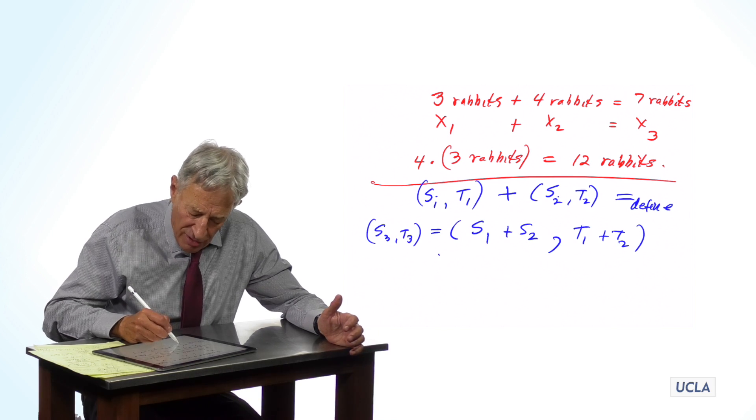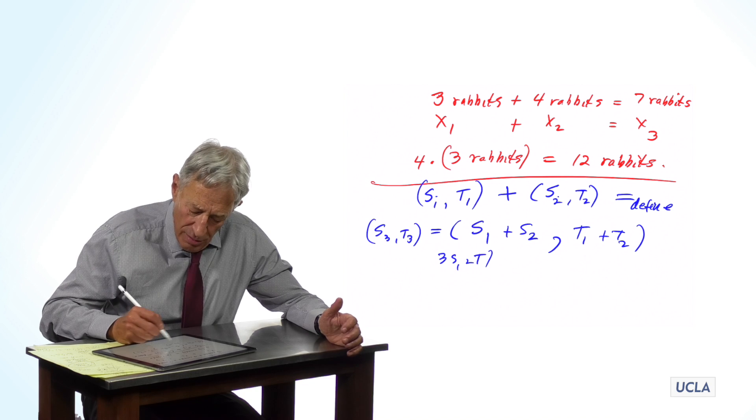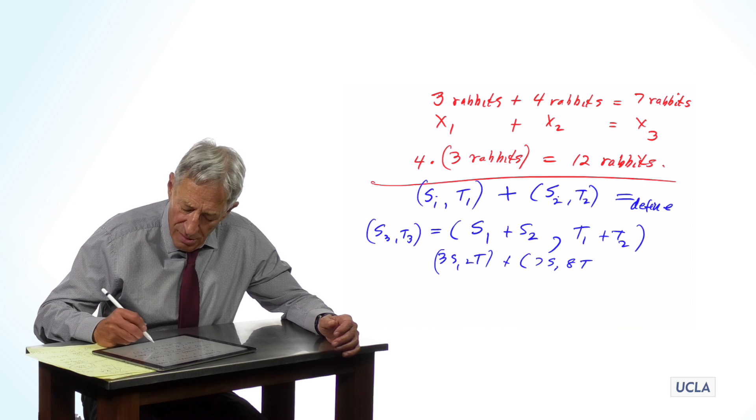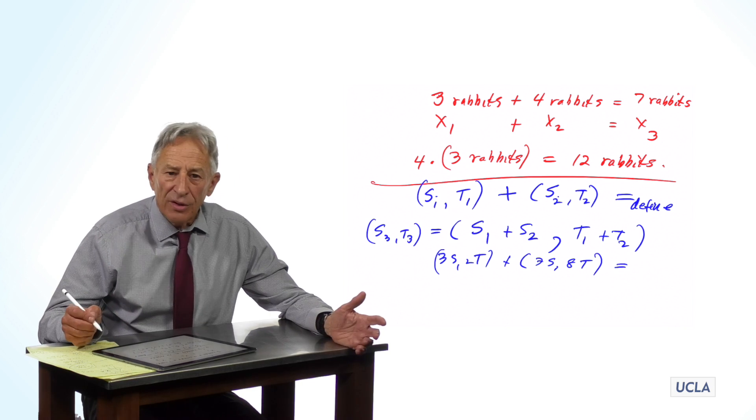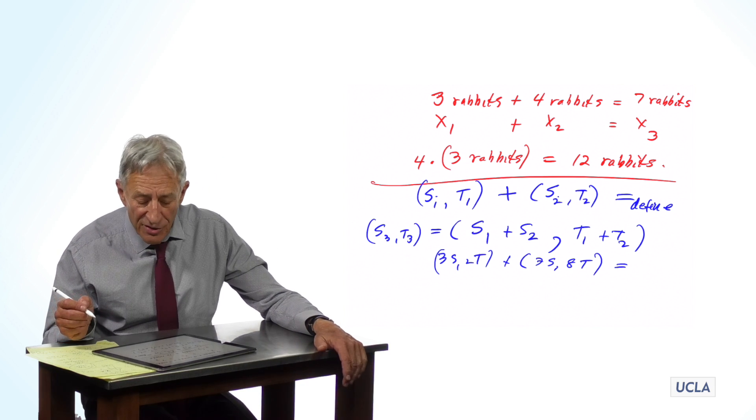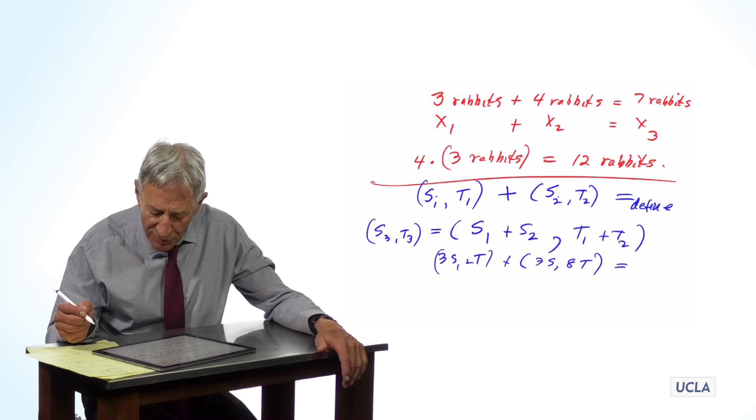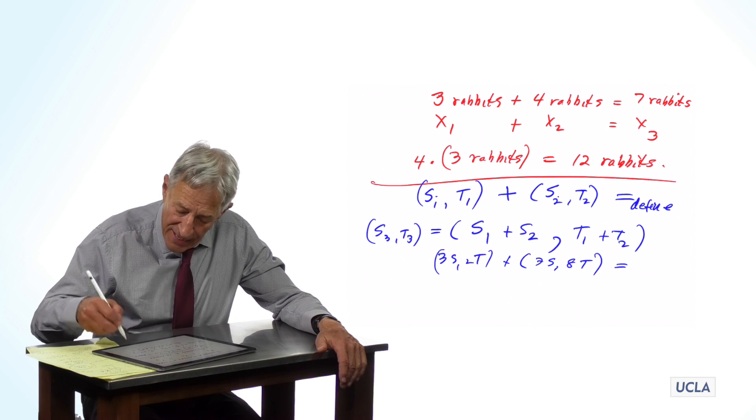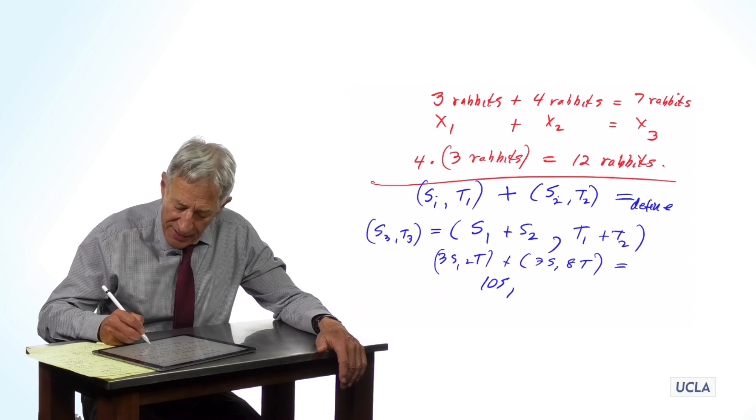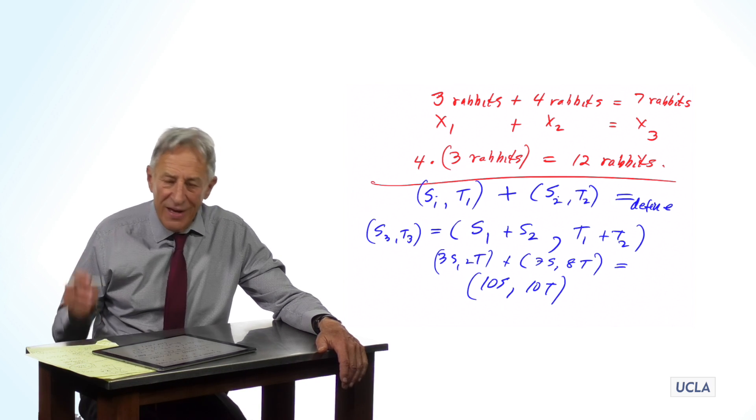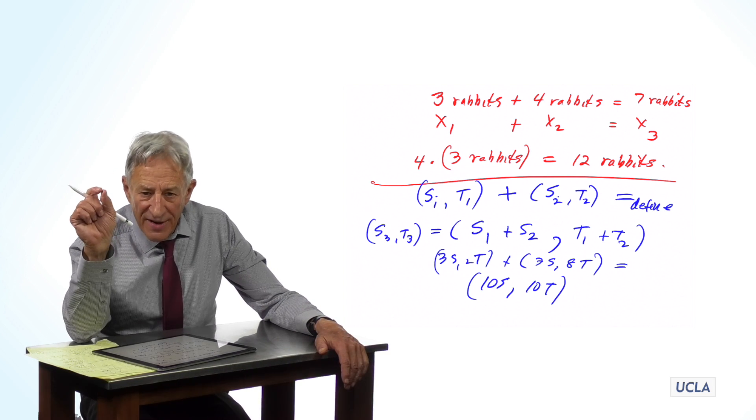So, and this makes total sense, right? Because if you had three sharks and two tuna, and you're adding that to seven sharks and eight tuna, well, you need to add, as they say, apples to apples and oranges to oranges. You need to add sharks to sharks and tuna to tuna. So, the sum of these is going to be three sharks plus seven sharks is ten sharks, and two tuna plus eight tuna is also ten tuna. So, that's how we add two state vectors.